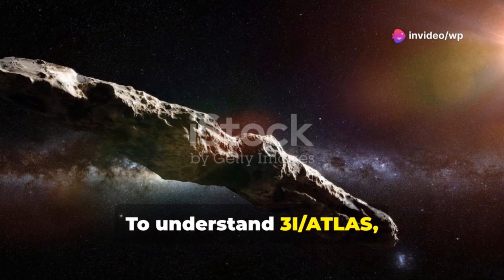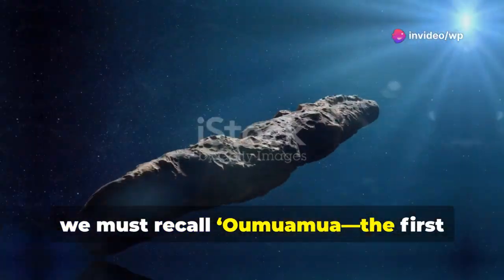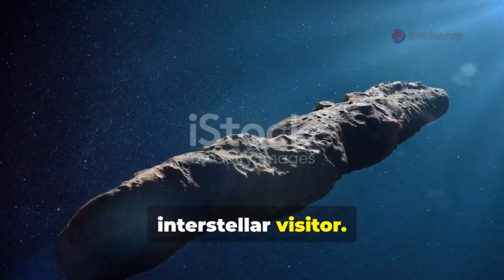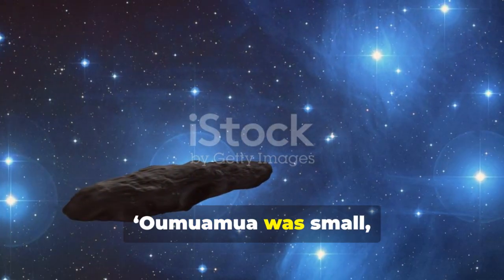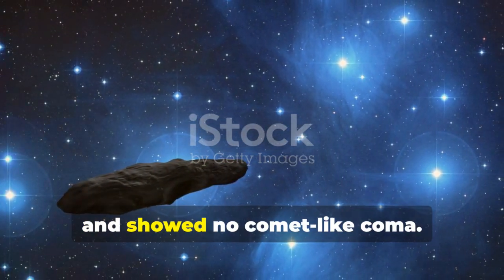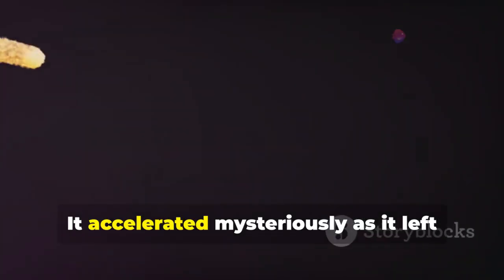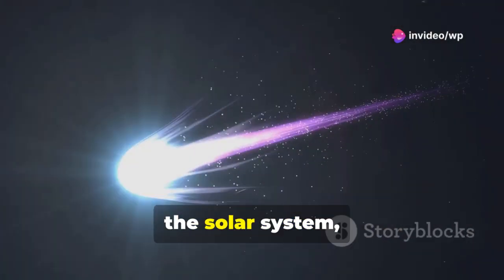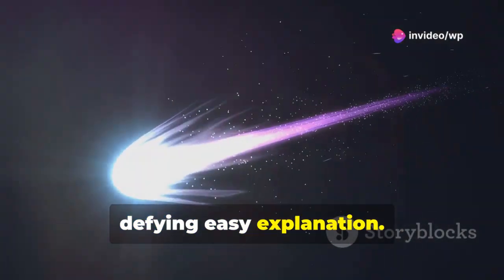To understand 3I Atlas, we must recall Oumuamua, the first interstellar visitor. Oumuamua was small, elongated, dark, and showed no comet-like coma. It accelerated mysteriously as it left the solar system, defying easy explanation.